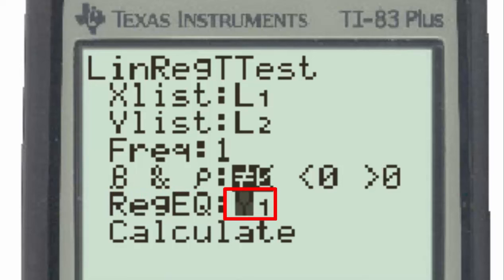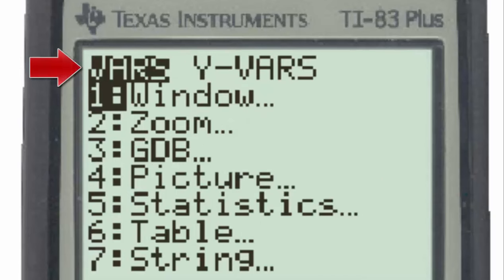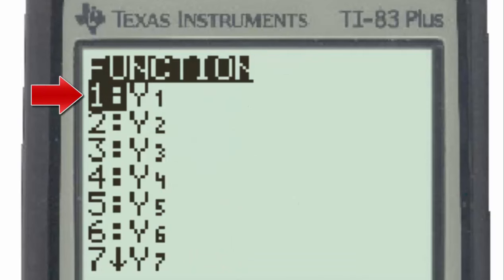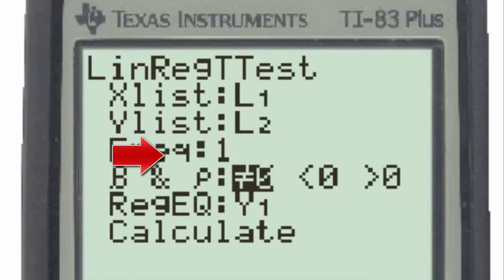Under Regression EQ, we want the y-subscript 1. If you do not have the y-subscript 1 in your calculator, you can get it there by following these easy steps. First, press on the Vars button, then go to the y-vars menu, select number 1 or function, and number 1 y-subscript 1. Finally, we'll go to Calculate.